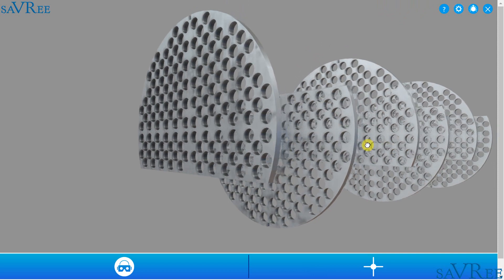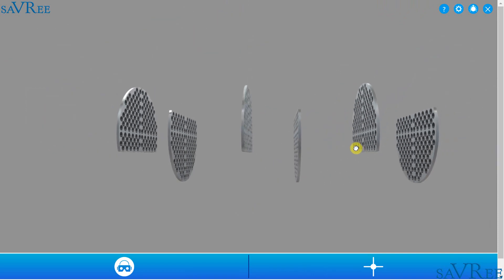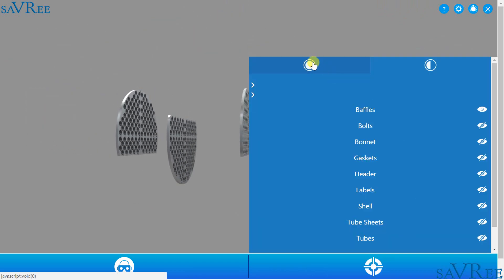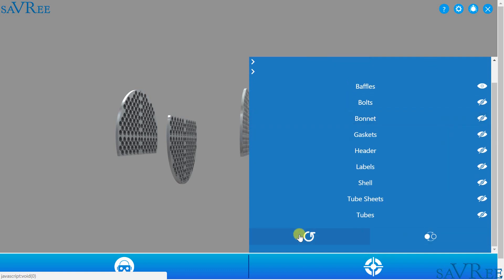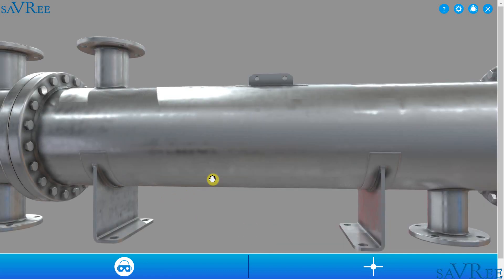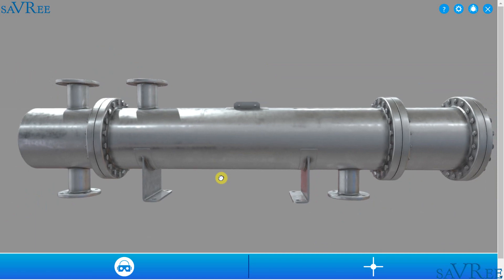If that was all a bit quick, don't worry, we are going to go through this in more detail later in the course with some different examples. I just think that was a nice introduction to what a shell and tube type heat exchanger is. Now let's go on to the next lesson.